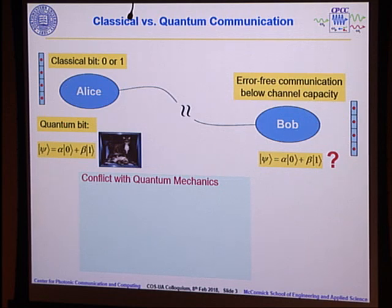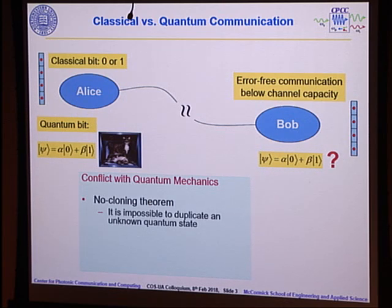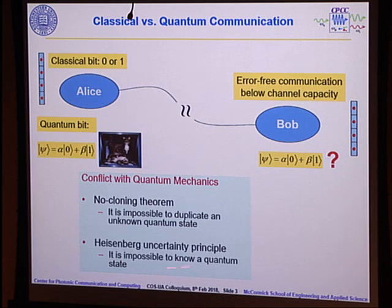One finds that if you ask can I do something similar like in the classical case, you run into conflict with quantum mechanics. If you did indeed succeed in doing this, you will have two copies of the same state. So you violate this no-cloning theorem. The linearity of quantum mechanics is very easy to show that if you are given an unknown quantum state, you cannot duplicate that. You can also say, can I measure and resend? And you find that you have difficulty with the Heisenberg uncertainty principle.